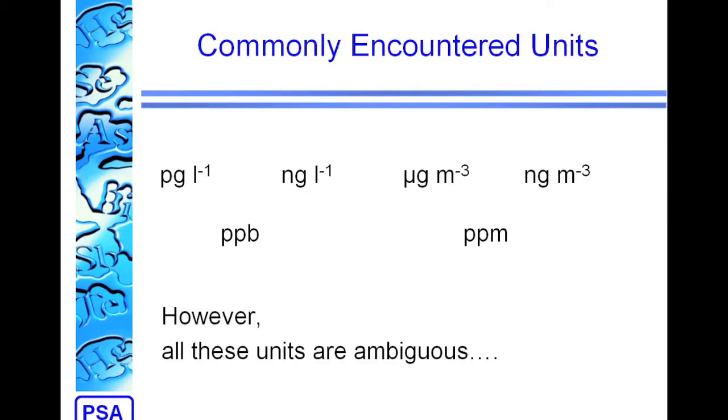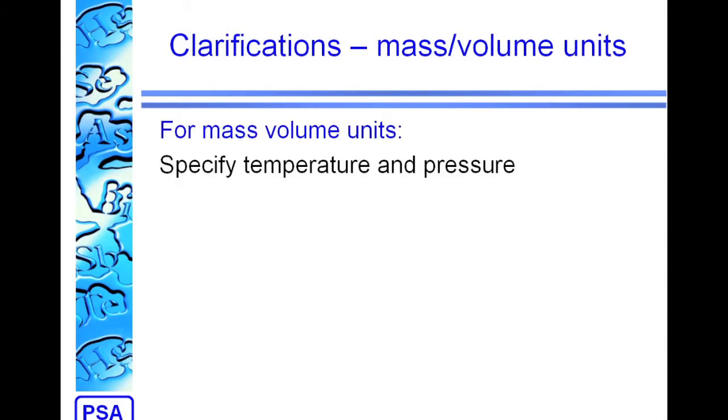Unfortunately, all of these units are ambiguous without further information. The first piece of information that we need is for mass volume units, we need to specify the temperature and pressure.